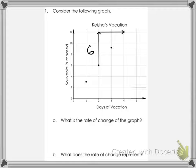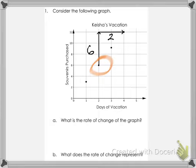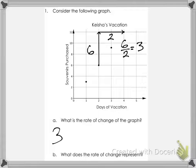Another example: consider the following graph. We have the dots already set up and are asked what is the rate of change. Starting from the middle dot, when you do your rise you go from a height of 6 to a height of 12 — that is a rise of 6. The run goes from 2 to 4, covering a distance of 2. So your rise is 6, your run is 2, and your slope — the rate of change — is 3.